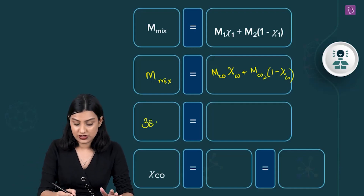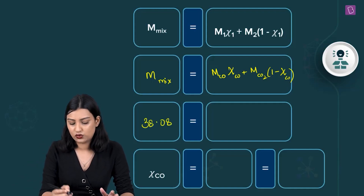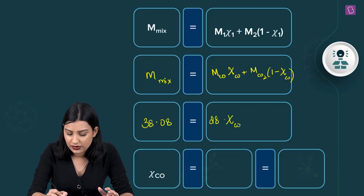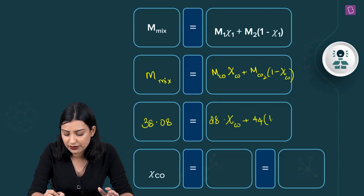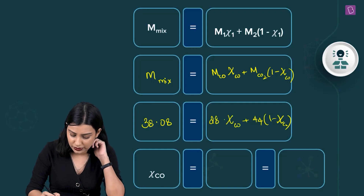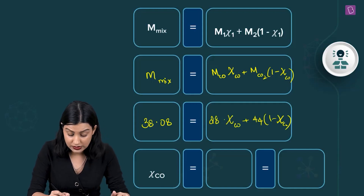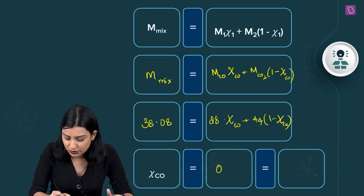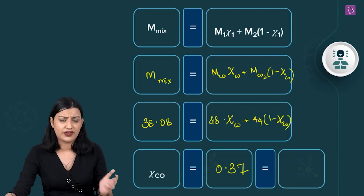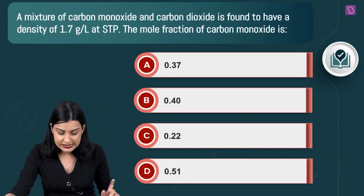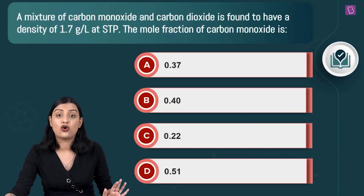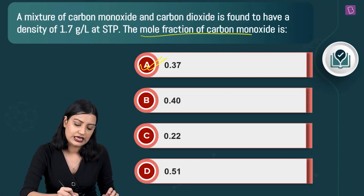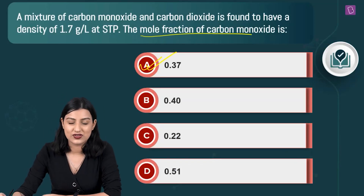Plugging in values: 38.08 = 28 × x_CO + 44 × (1 − x_CO). Simplifying this gives the mole fraction of carbon monoxide as 0.37. That's what the question was asking — the mole fraction of carbon monoxide — so option A, 0.37, is the right answer.